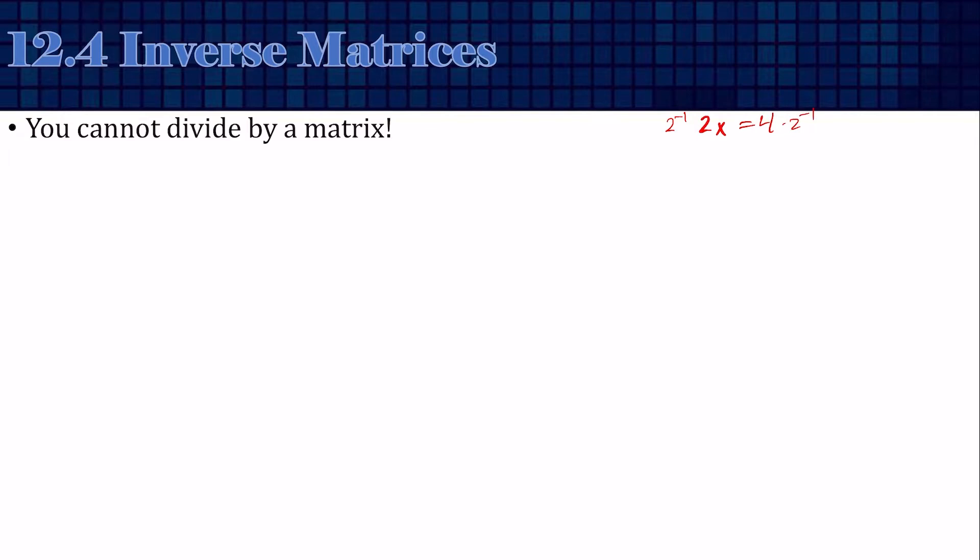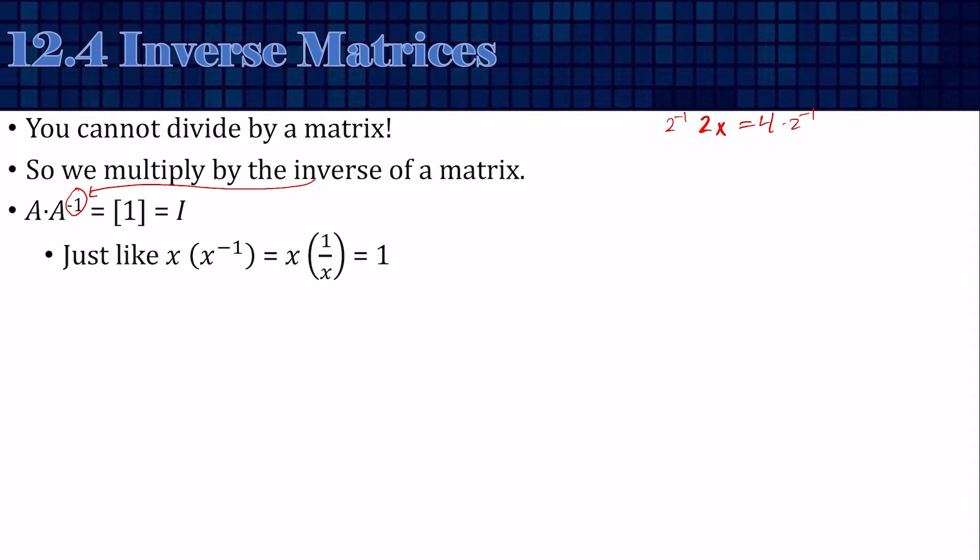We're going to do the same type of thing. If we multiply a matrix by its inverse, this negative 1 means inverse, it equals the identity matrix, which isn't like doing anything. Just like x times x to the negative 1 is 1.